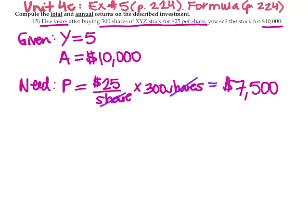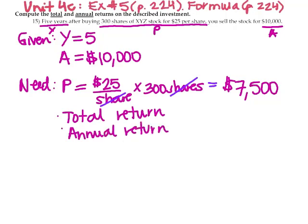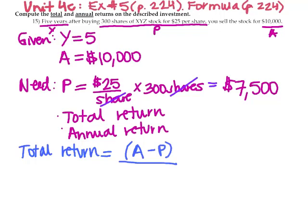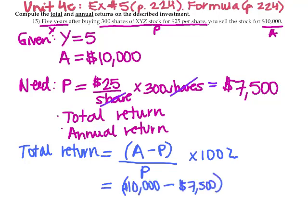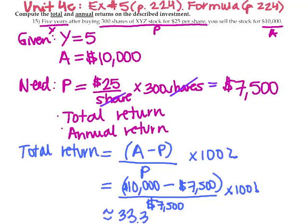Now we've identified all values and need to calculate the total return and the annual return. The formula for total return is: (A minus P) over P, times 100%. Substituting our values, we have ($10,000 minus $7,500) over $7,500, multiplied by 100%. You can plug this into your calculator. For the total return, you will get approximately 33.33%, rounded to the hundredths place.